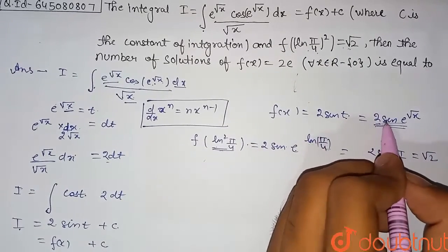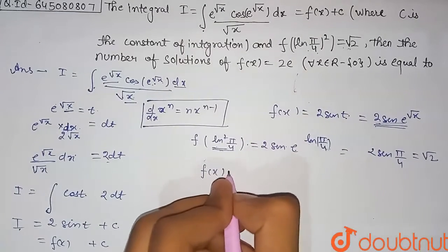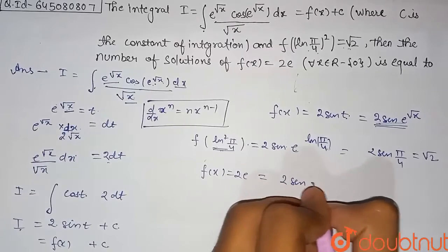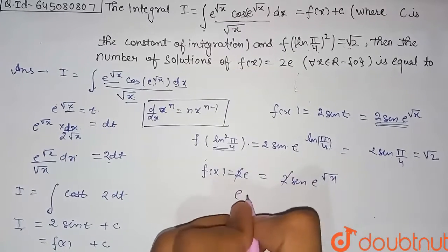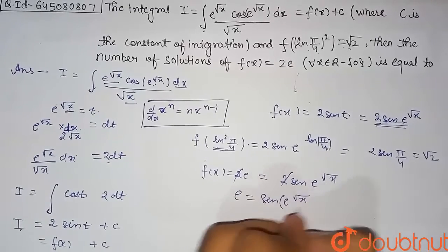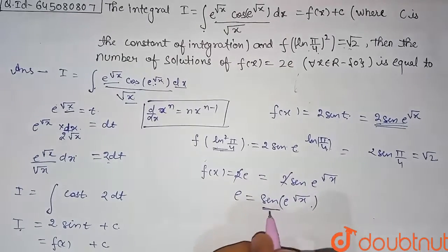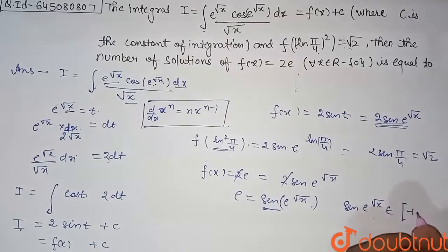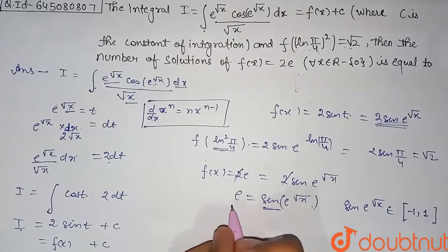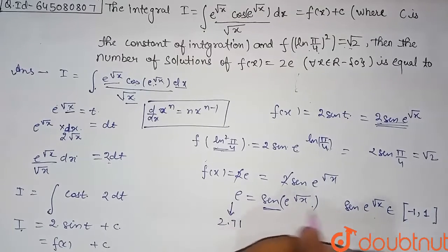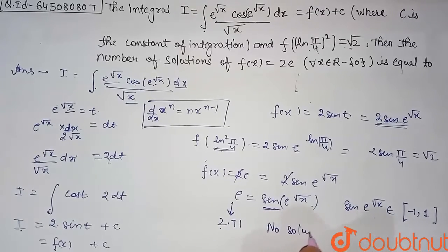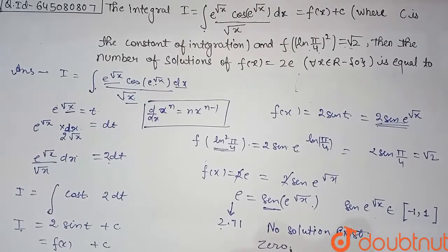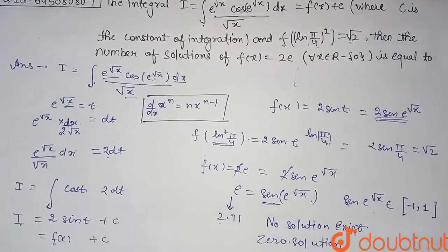Now we find the number of solutions of f(x) = 2e. That gives 2 sin(e^(√x)) = 2e, so sin(e^(√x)) = e. However, the maximum value of sin is 1, and sin(e^(√x)) belongs to [-1, 1] only. Since e ≈ 2.71, sin(e^(√x)) can never equal e. Therefore, no solution exists, and the number of solutions is zero.